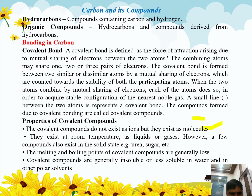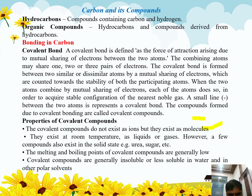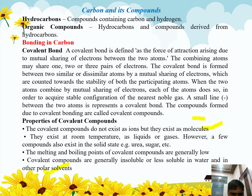Covalent compounds exist at room temperature in a liquid or gaseous state; however, a few compounds exist in solid state — for example, urea and sugar are solid covalent compounds. The melting and boiling points of hydrocarbons are generally low. Covalent compounds are generally insoluble or less soluble in polar solvents but are soluble in non-polar solvents.